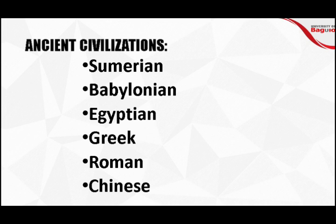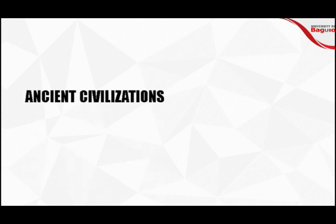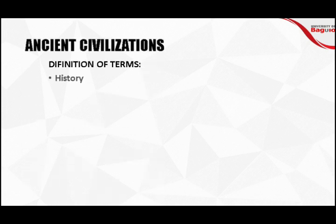For this first part of the recorded video, I'm going to discuss the first three: from Sumerian civilization going down to Egyptian civilization. For the next part, I'm going to discuss the other three, from Greek civilization going to Chinese civilization. Let's start with the definition of terms as our basis. Since we're going to deal with ancient civilizations and talk about history, we should know what history means.